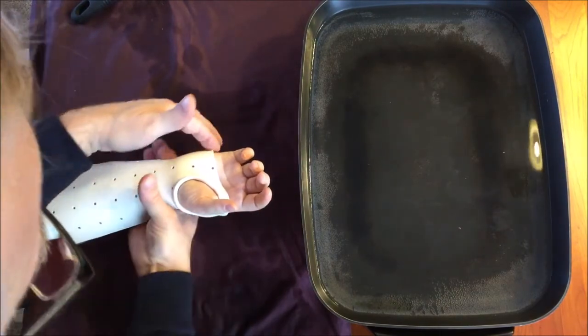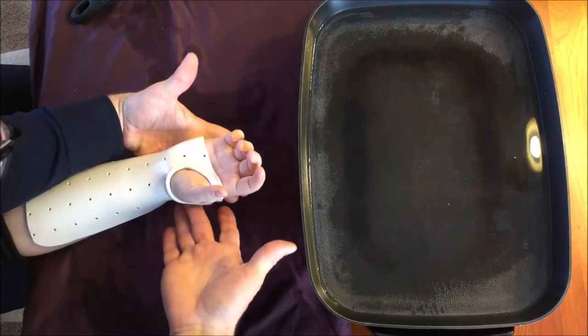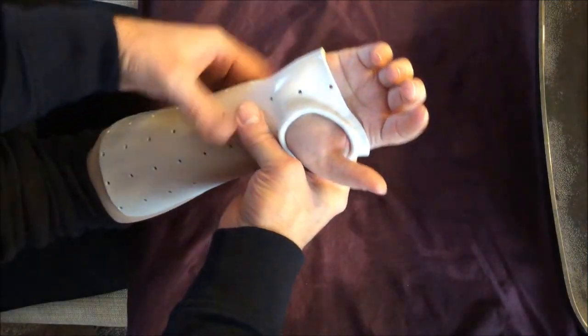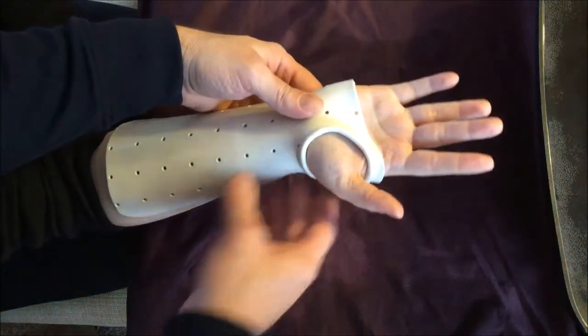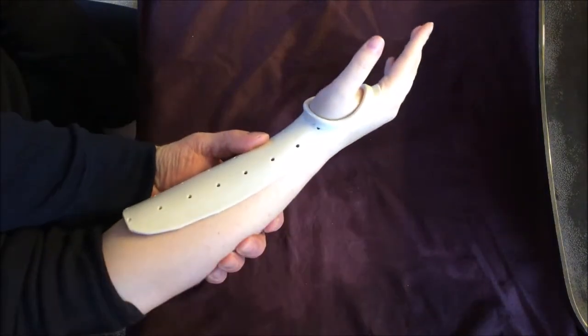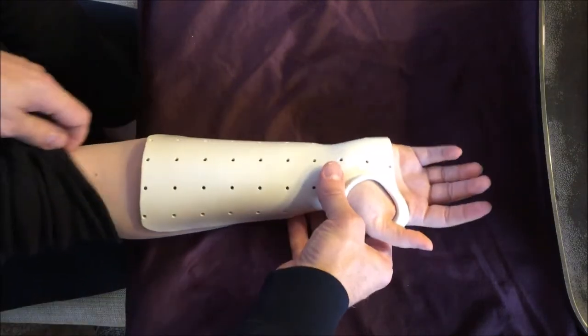Once you have the shape that you want, you just leave it and let it cool off on the patient's extremity. Here you can see that we have the proximal palmar crease free for good finger motion, the thenar eminence free, and the orthosis goes halfway around the circumference of the forearm.